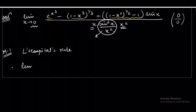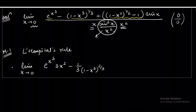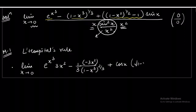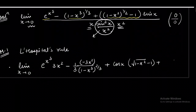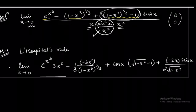Applying L'Hôpital's rule gives limit x tends to 0 of: derivative of e^(x³) which is e^(x³) times 3x²; then the derivative of the second term gives [1/(3(1−x³)^(2/3))] times (−3x²); the third term involves cos x times √(1−x²) − 1; and the last term of the numerator from differentiating sin x times (1−x²)^(1/2) gives [1/(2√(1−x²))] times (−2x) times sin x. The denominator becomes 3x².